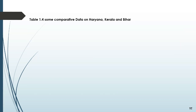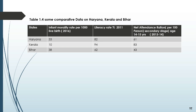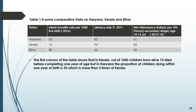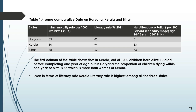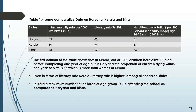Based on table 1.4 we can conclude the following. The first column shows that in Kerala, out of 1000 children born alive, 10 die before completing one year of age. But in Haryana, the proportion of children dying within one year of birth is 33, which is more than three times that of Kerala. Even in terms of literacy rate, Kerala's is highest among all three states, and in Kerala the maximum number of children in the age group 14 to 15 are attending school compared to Haryana and Bihar.